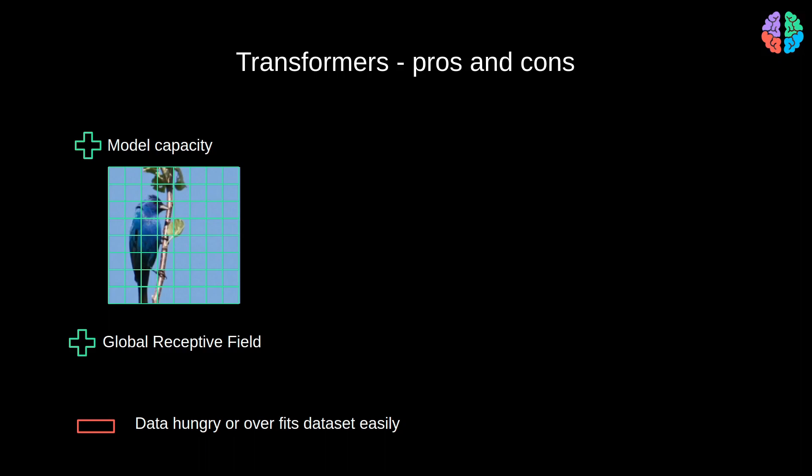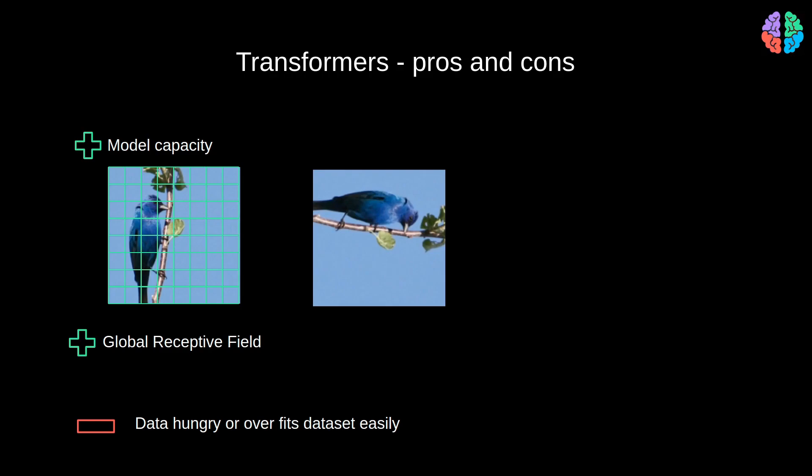Because of the global receptive field, a rotation or a translation augmentation such as this is not too different from the original image and so transformers tend to overfit the data very easily. This is the main reason we have to train transformers with millions and millions of images or in other words transformers are data hungry and can easily overfit the data set. So if we can bring together the advantages of CNNs and transformers then theoretically we should have a much more efficient network.